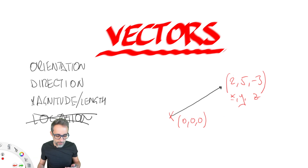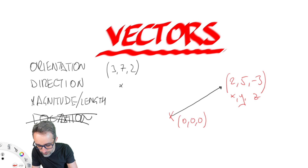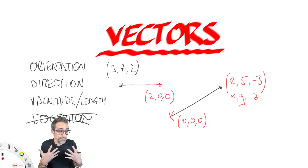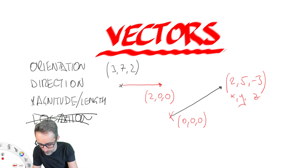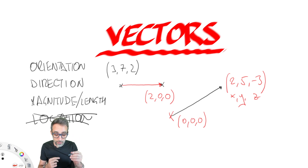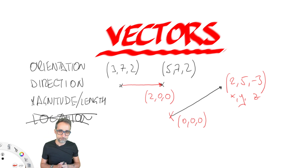For example, if we had a point at coordinates three, seven, and two, and then we had a vector two, zero, zero — that vector doesn't really have a location — but the coordinates of the point at the tip of the arrow would be whatever the original point's coordinates were, plus the coordinates of the vector. So this point would be at coordinates five, seven, and two. The vector can be used interchangeably anywhere.